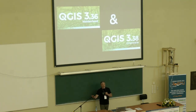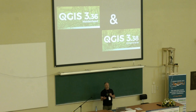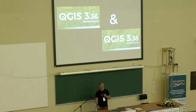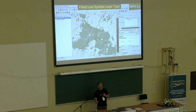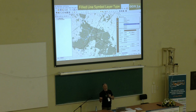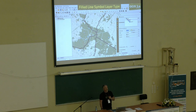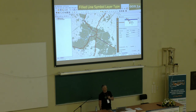That was a run through the new long-term release. I'll spend the last couple of minutes covering notable features in 3.36 Maidenhead, released earlier this spring, and 3.38 Grenoble, just released last week. In 3.36 Maidenhead, there's now a filled line symbol layer type. I can have a line layer, choose filled line, and get basically a similar set of options that I would with a polygon layer — filling the line with different polygon styles, choosing the width, and things like that.